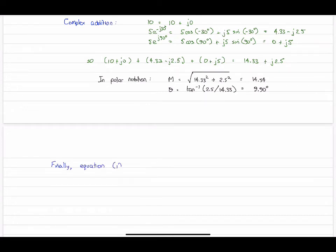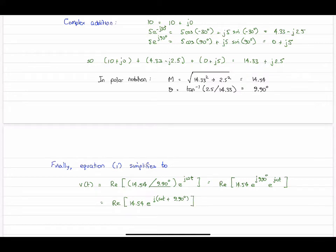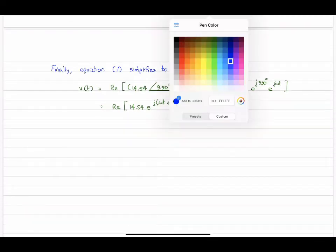Let's put it back into the equation that we labeled as 1, which is just above. Here it is. We've done our complex addition, and this is what it's turned out to be. That's the stuff within the parentheses. There's our e^(jωt) common term. Now let's recombine the exponentials here. And one more step: 14.54, and then let's combine these two exponentials, and we get a single complex exponential with jωt plus 9.9.